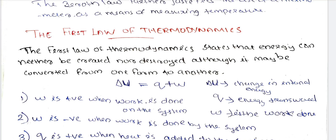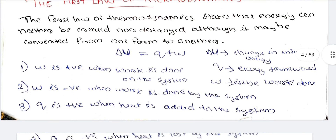The mathematical formulation is: delta U is equal to q plus w. Here, delta U is the change in internal energy, U is the internal energy, q is the heat transferred, and w is the work done.